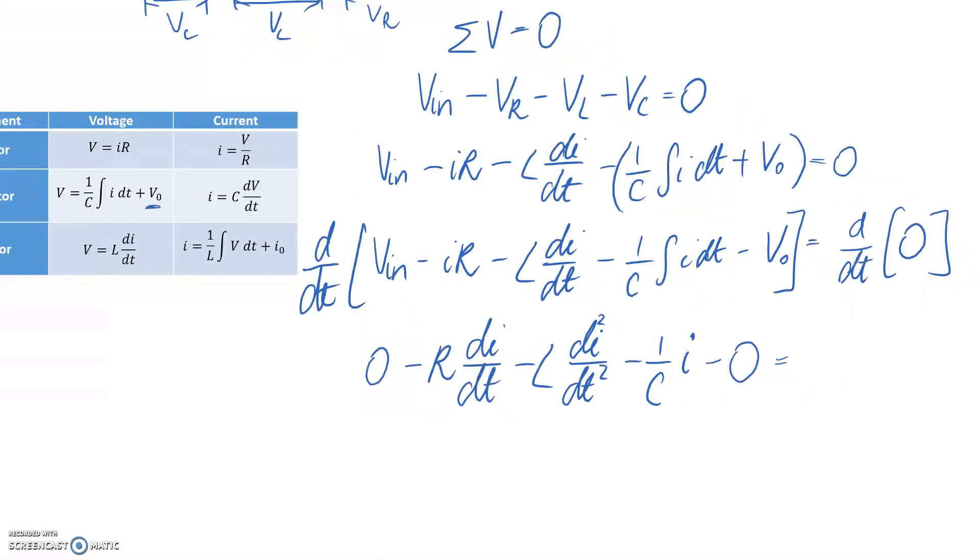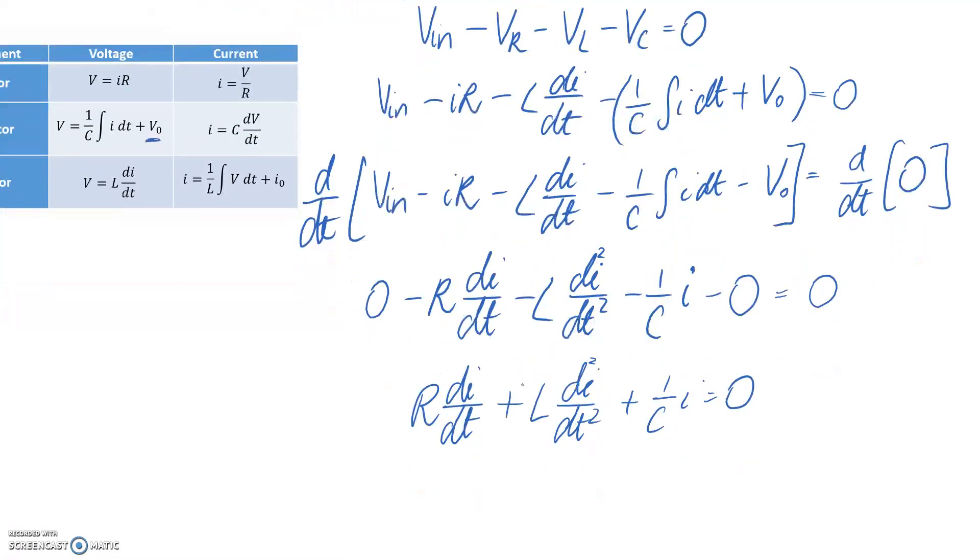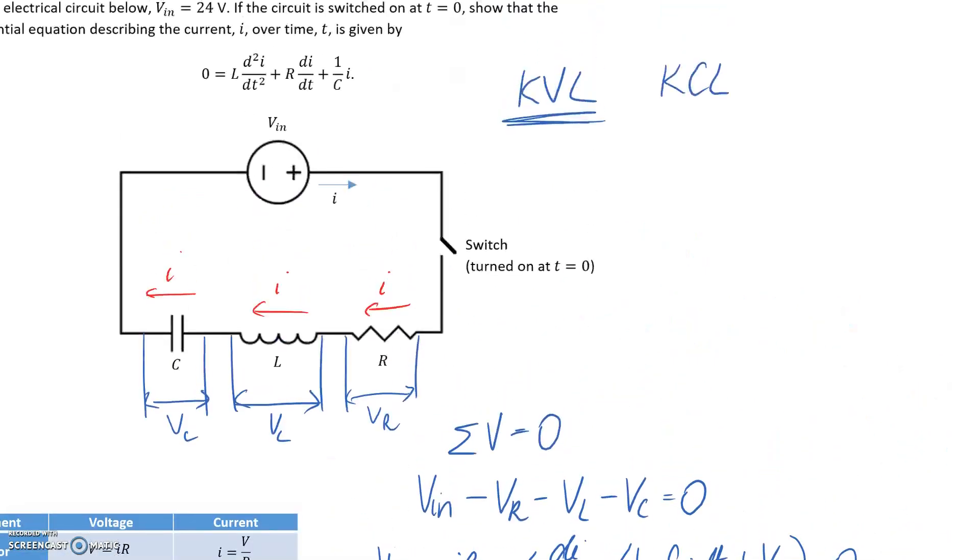We said the derivative with respect to time of zero was also zero here. So what we can do is just make this look a little bit nicer. So I can get rid of all the zeros, and we can see that everything else is negative in the equation. So if I times everything by negative one, they should become positive. So I'll get positive di/dt, positive of this, and positive of this.